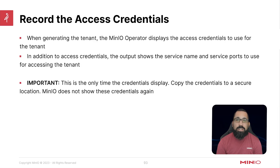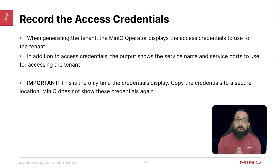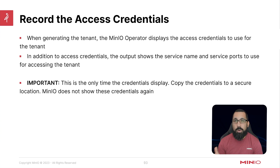When generating the tenant, the MinIO operator displays the access credentials to use for that tenant. In addition to the access credentials, the output shows the service name and service ports for accessing the tenant. This is very important: this is the only time the credentials will display. Copy the credentials to a secure location — MinIO does not show these credentials again. If you lose them, you'll have to go into the MinIO operator console and regenerate new credentials to access this environment.